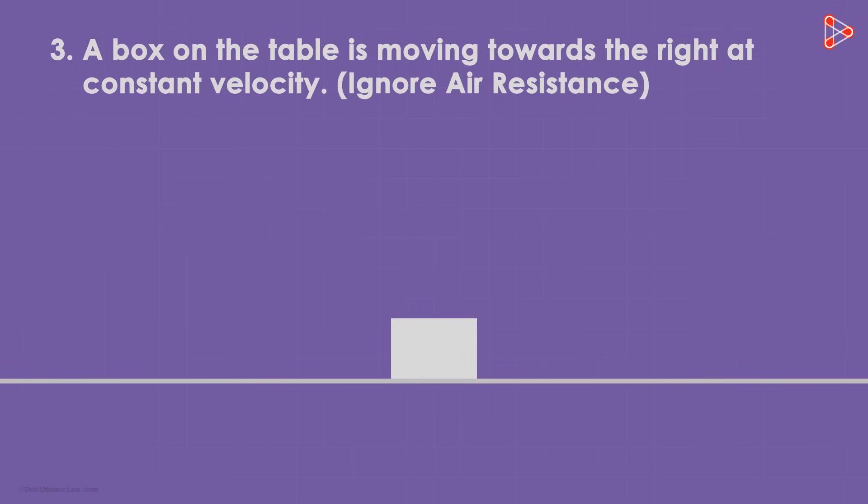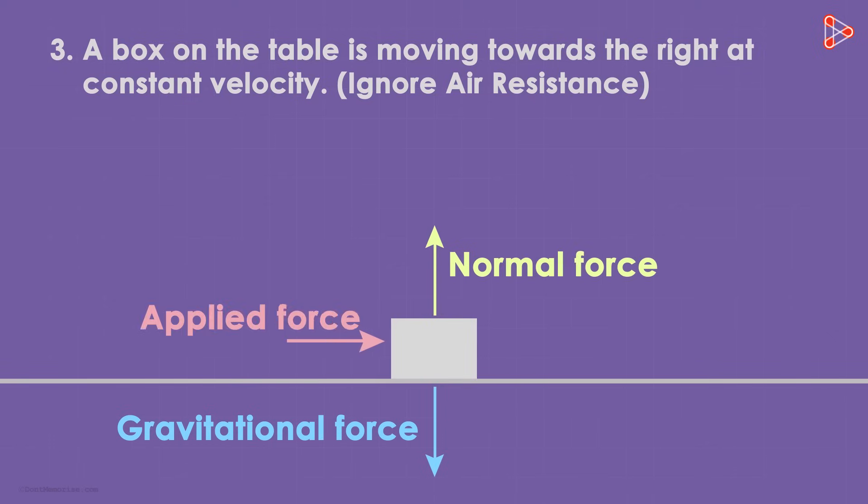The third situation is extremely interesting. Try making its free body diagram. It says that the box is moving at a constant velocity towards the right. In any case, there will be the gravitational and normal forces acting on the box. But this time, the applied force and the frictional force will be the same in magnitude. Hence the size of these two arrows will be the same.